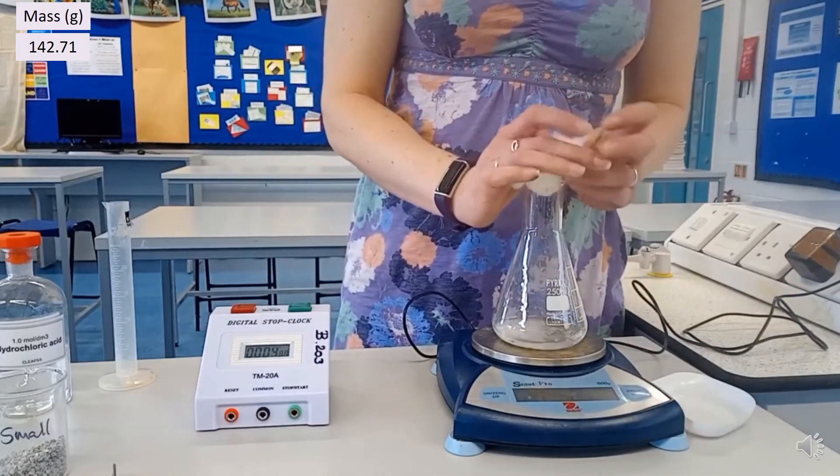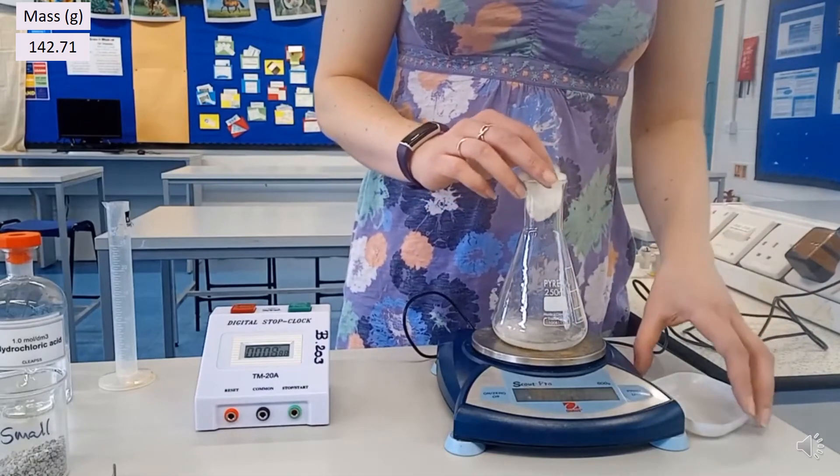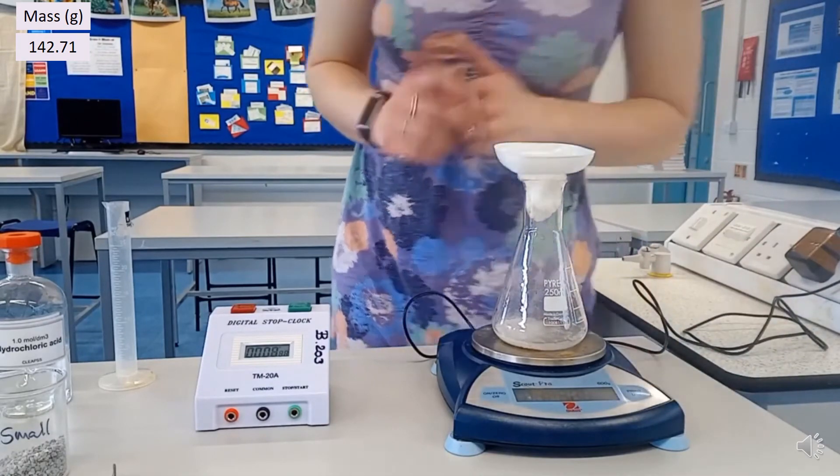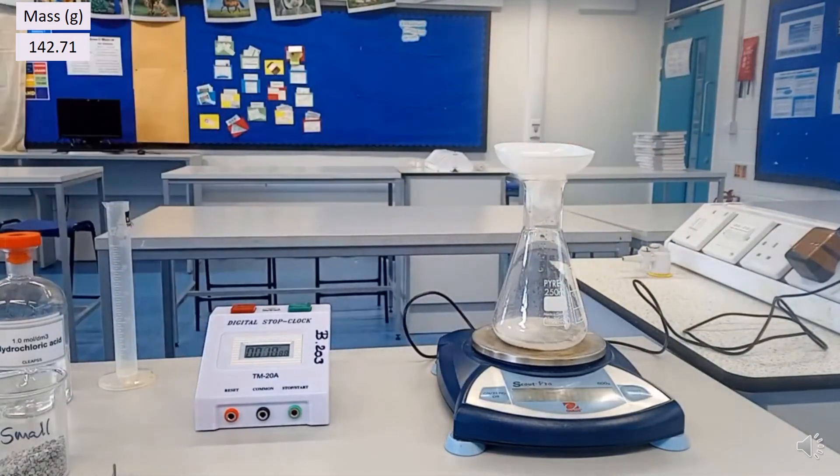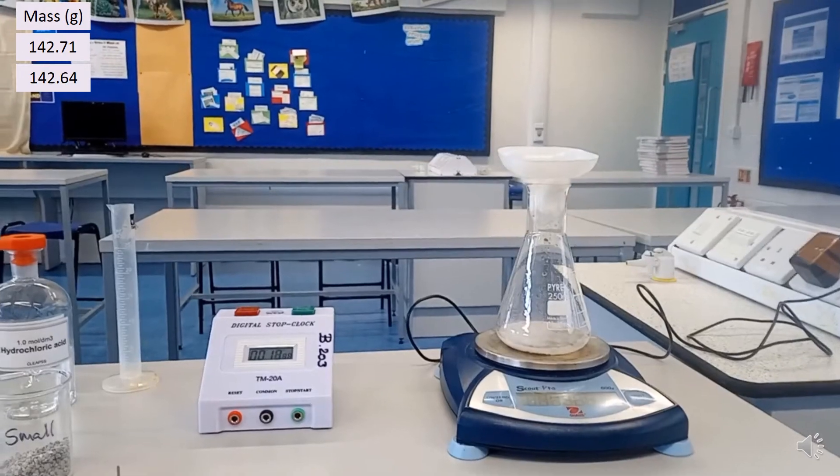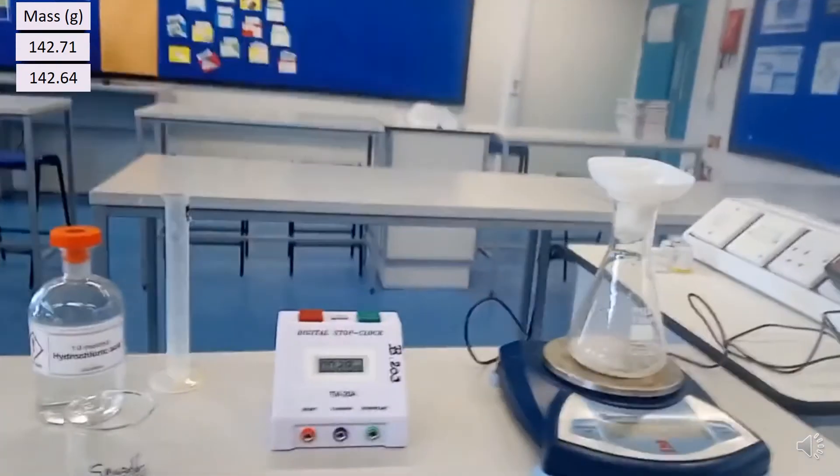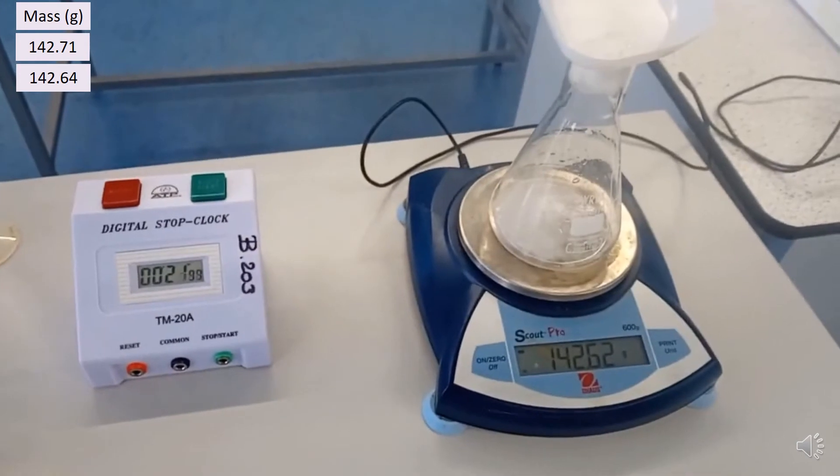I simultaneously start the stop clock and add the marble chips, then plug the neck of the conical flask using some cotton wool, which will prevent any acid from splashing out. Every 15 seconds, I write down the new mass of the reaction. It's important that because I measured the mass of the weighing boat at the start, the mass is still included as we go along, so that's why it's balanced.